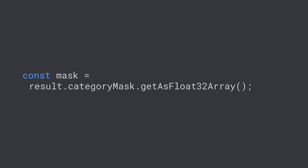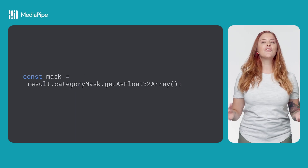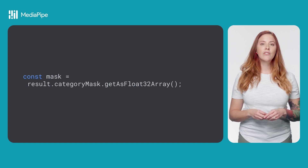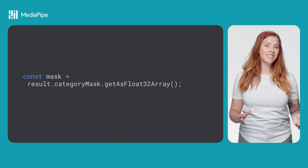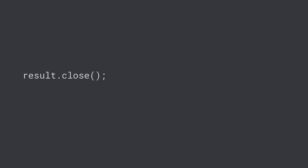You can access your segmentation results through the category mask or confidence masks properties. The content of the output depends on the output type you set when you configured the task. Each use case for this data will be unique, so check out the CodePen demo for an example you can tweak to fit your needs. If you're done using the image segmenter results, call the close method to clean up — if you use the callback method, you don't need that step.